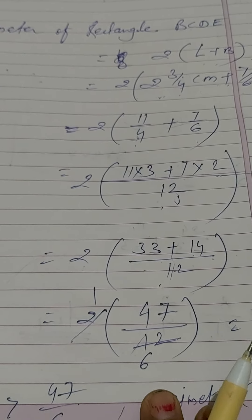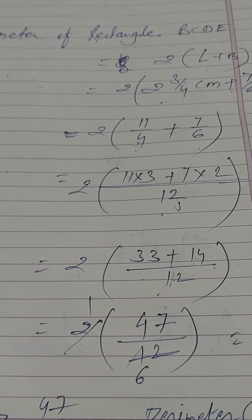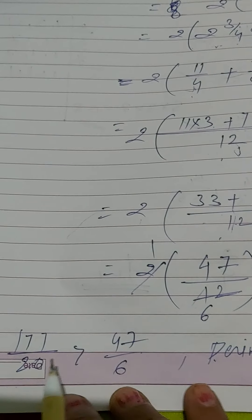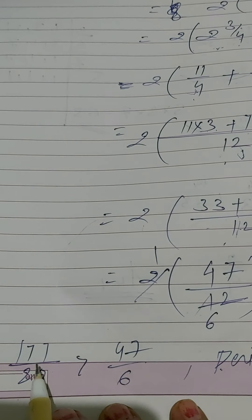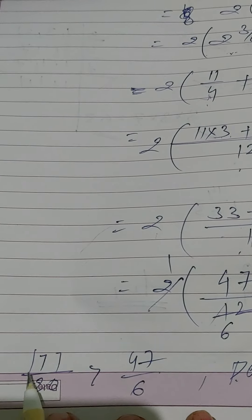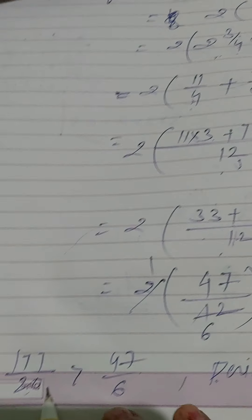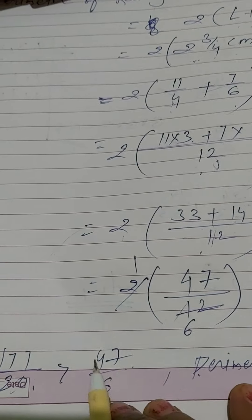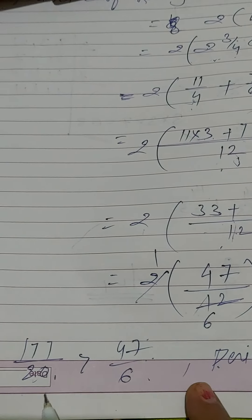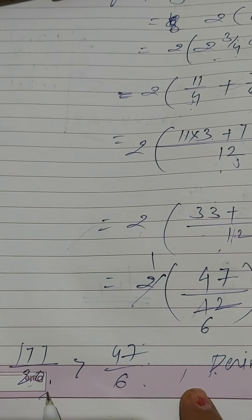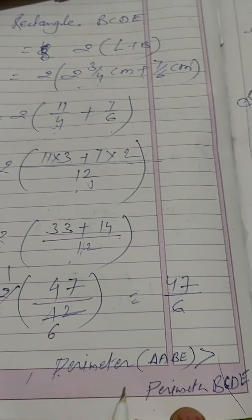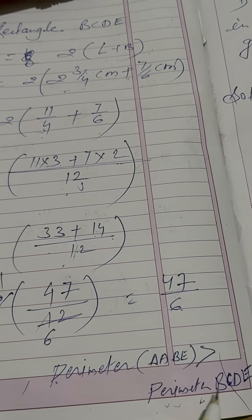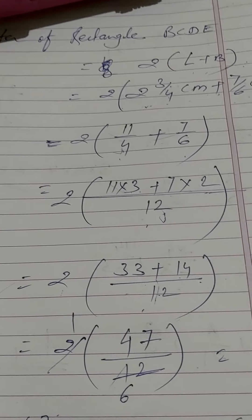Comparing the two: the perimeter of triangle ABE is 177/20 and the perimeter of rectangle BCDE is 47/6. The perimeter of triangle ABE is greater than the perimeter of rectangle BCDE. That is the answer.